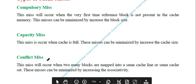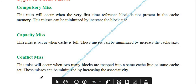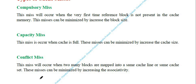The third type is conflict miss, also called collision miss or interference miss. This occurs when too many blocks are mapped to the same cache line or same cache set. When different blocks map to the same cache line, there is a chance of conflict occurring. This type of miss can be minimized by increasing the associativity of the cache organization.